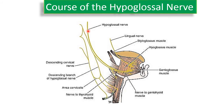It lies between the internal jugular vein and the internal carotid artery, and runs down to the posterior belly of digastric. Accompanied along the tendon, it runs forwards, crosses the internal carotid artery and external carotid artery, and comes to lie beneath the mylohyoid muscle. From there, it supplies the tongue by various branches, responsible for all movements and shape of the tongue.